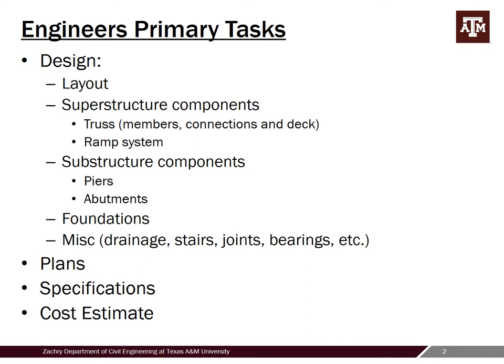Once all the design work is done, the plans need to be developed. Usually you're doing it step by step and may have drafters to help. In the end, the main product of the engineer is the actual plans, which go out to bid along with the specifications. The specifications have more detailed information — for example, the concrete in the deck may be specified as 4 KSI on the plans, but the specifications will include the full mix design, slump, and so on. We also typically put a cost estimate together for the owner for budgetary reasons.